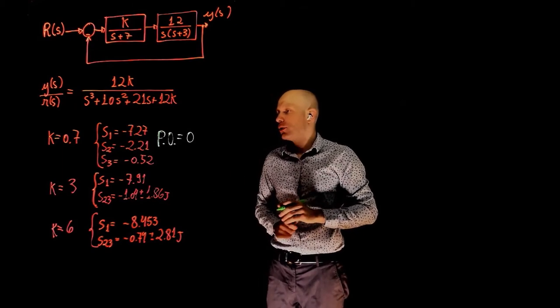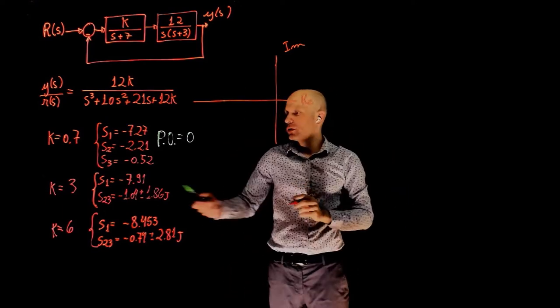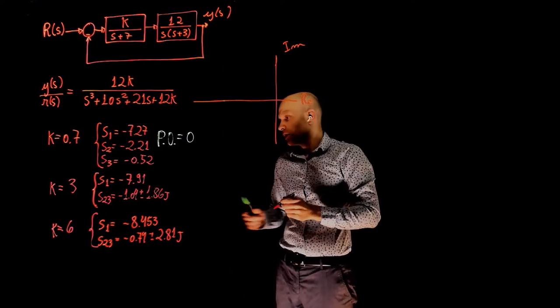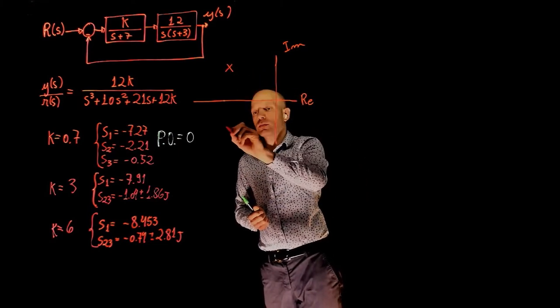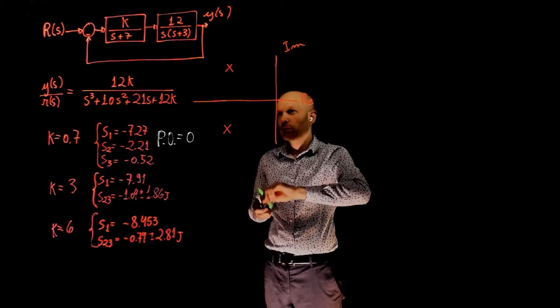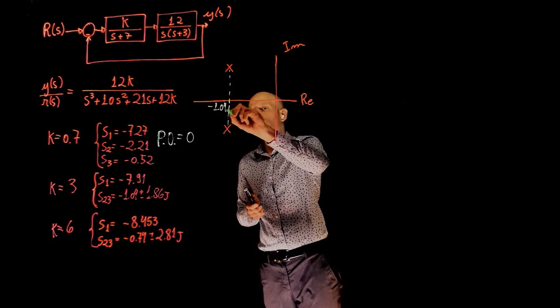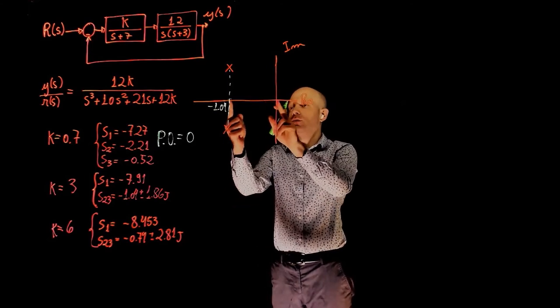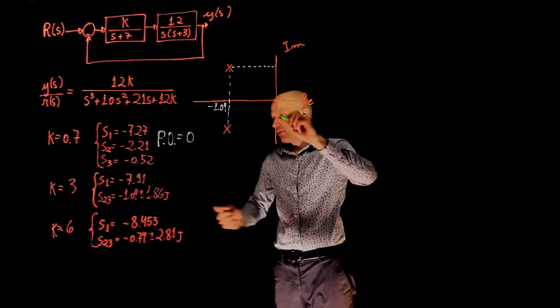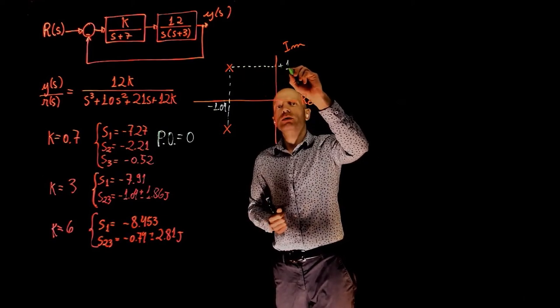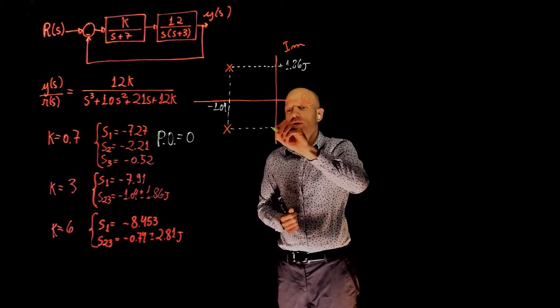Let's just start by plotting the location of these poles in the S-plane. The real part of the pole is negative 1.04. So here you have the two poles, negative 1.04, which is the distance to the origin on the real axis, and on the imaginary axis we have plus 1.86j and negative 1.86j.